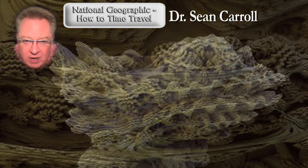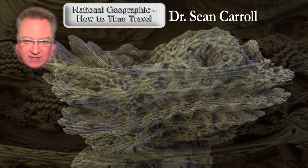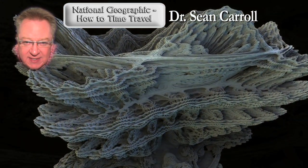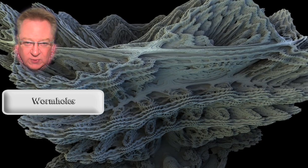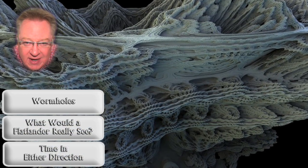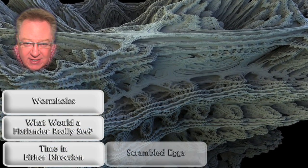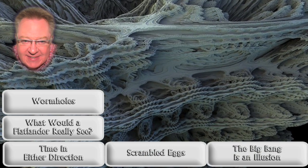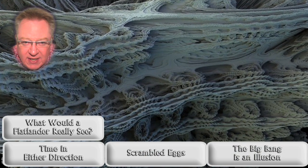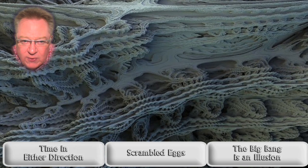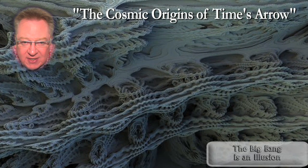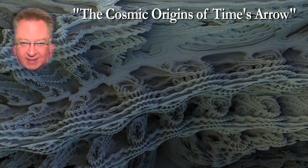The physicist featured prominently in this video is Dr. Sean Carroll, who I've talked about a number of times in this blog, in entries such as Wormholes, What Would a Flatlander Really See, Time in Either Direction, Scrambled Eggs, and The Big Bang as an Illusion. I've been a big fan of Dr. Carroll's work ever since I came across an article he wrote for Scientific American last year called The Cosmic Origins of Time Zero.